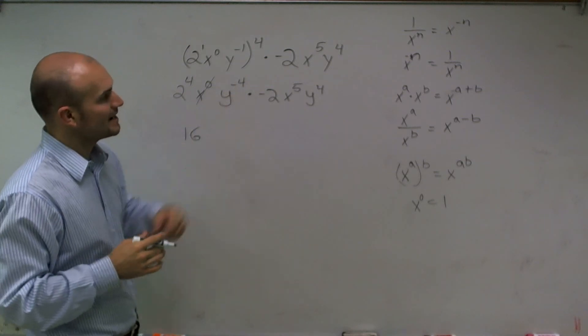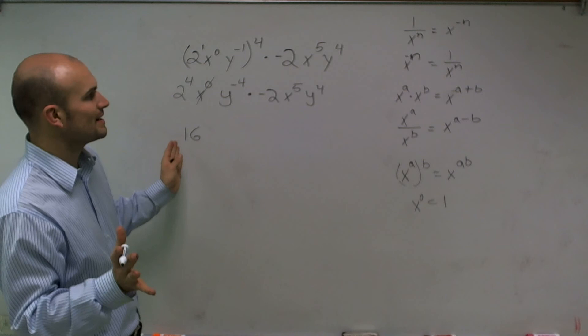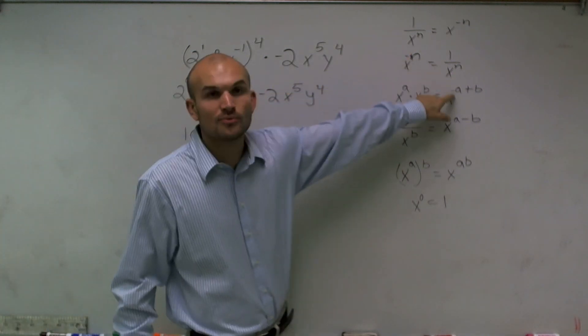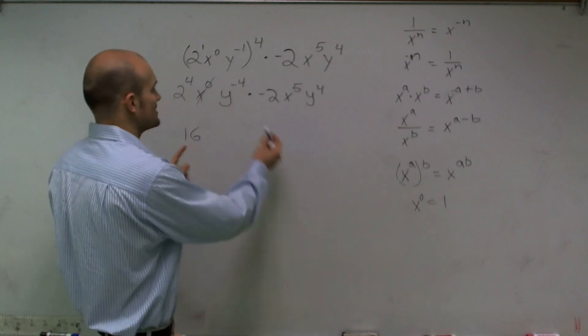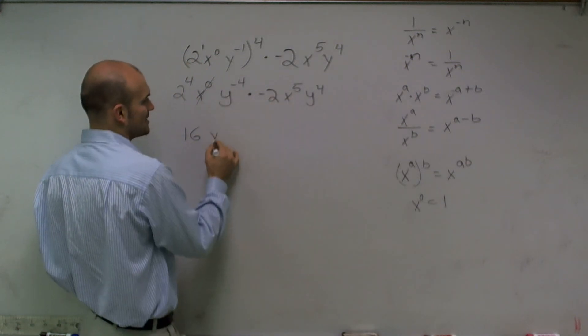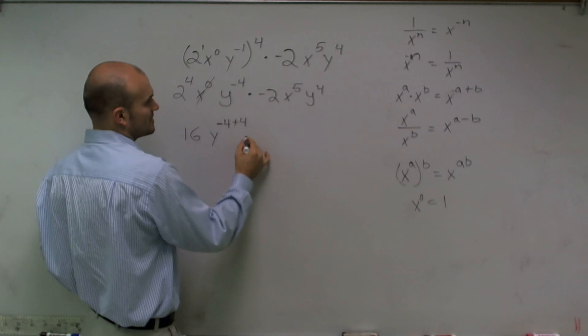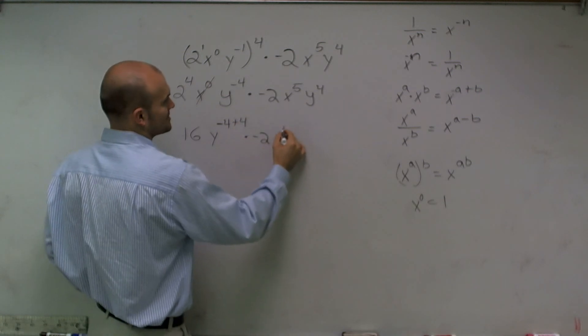Now, y to the negative 4th, before I do anything with this, before I even notice this and say you can put it below, what I can do is say I'm multiplying y times y. So I can say y to the negative 4th plus 4 times negative 2x to the 5th.